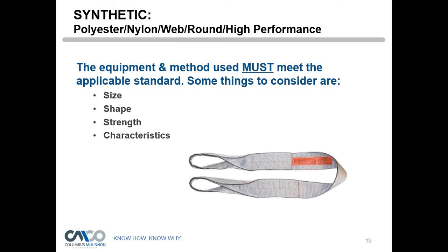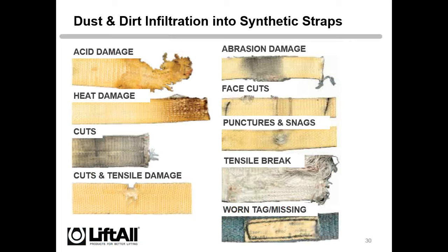This slide shows nine representations of damage done to different types of slings. A very important one is a worn or missing tag. Straps hanging outside are susceptible to rain, snow, and ice, and the warning tags on them tend to deteriorate quickly — those tags have to be there and legible. The tag on synthetics takes the place of the G70, G80, or G100 embossings on chains. We have to not only have the tag, but be able to read it.